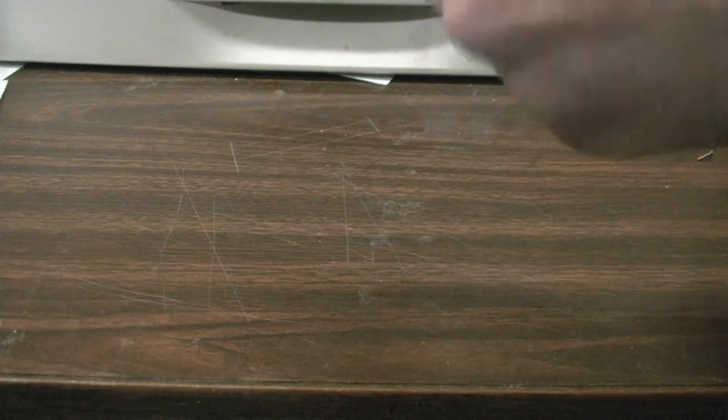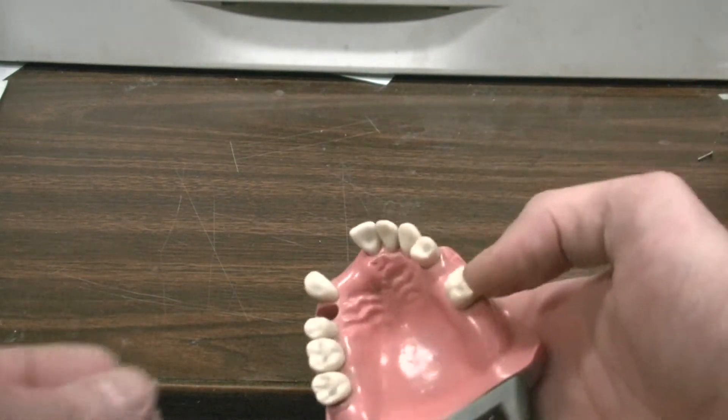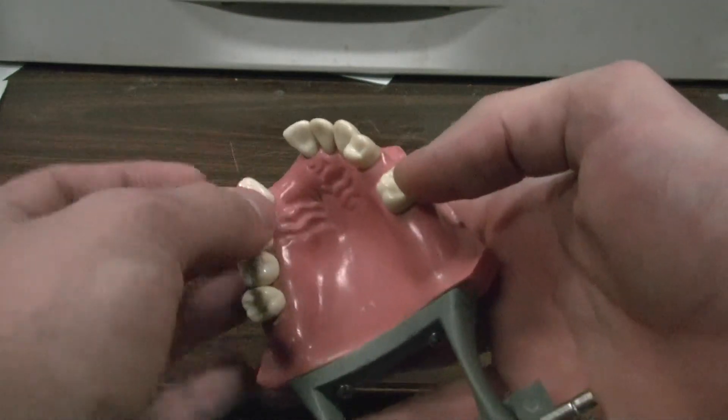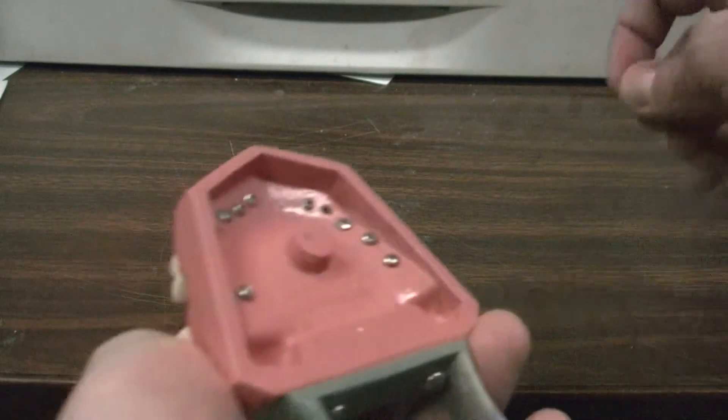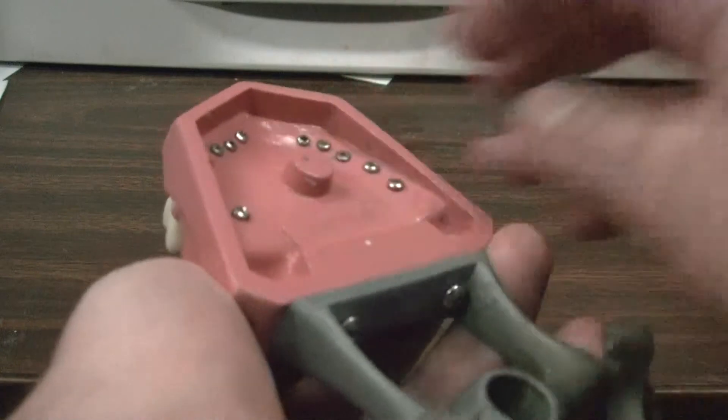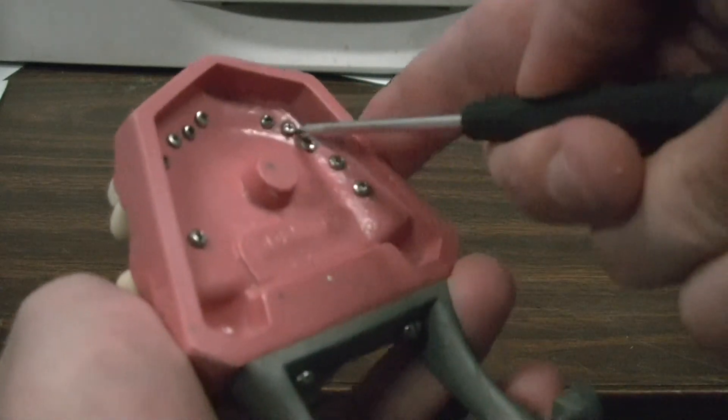First, what you do, instead of putting the tooth in and then screwing it in, you put the screw in and let the screw draw the tooth into the typodon.